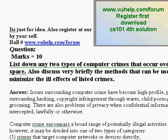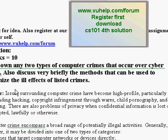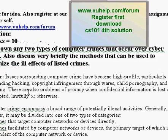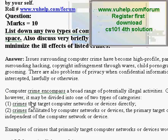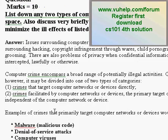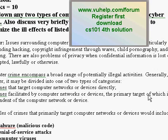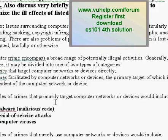The assignment question is: list down any two types of cybercrimes that occur over cyberspace. First, I have given the definition of cybercrime. After that, there are two types: the first type affects networks and devices directly, and the other one targets primary devices independent of the computer network.